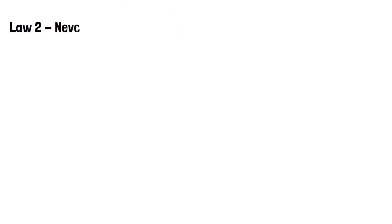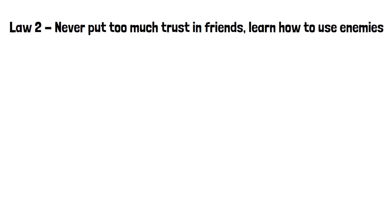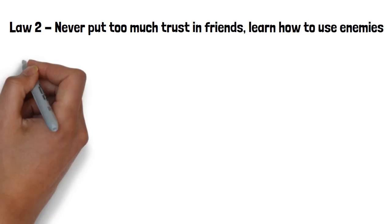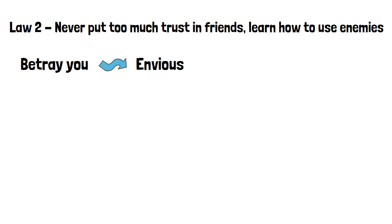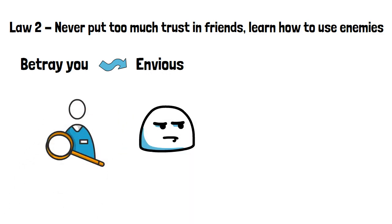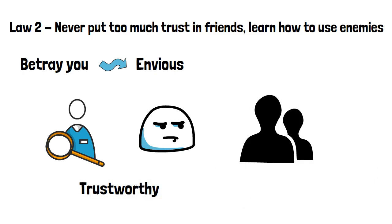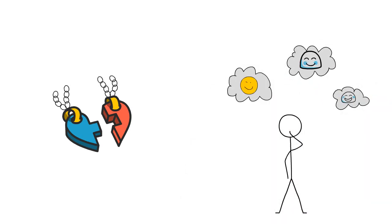Law 2, never put too much trust in friends. Learn how to use enemies. Your friends are more likely to quickly betray you as they tend to be envious. But if you hire someone who used to be your enemy, they will prove themselves more trustworthy, as they have more to prove. So you have more to fear from your friends than your enemies. Most times you think you know your friends very well. This is because honesty doesn't strengthen bonds all the time. Therefore, friends usually hide their true feelings about each other. It is best to hire an enemy because your intentions are upfront and are not clouded with personal feelings.